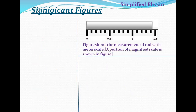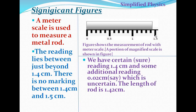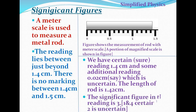For example, suppose the length of a rod is measured using a meter scale. The reading lies between 1.4 and 1.5 — we are certain about 1.4. If we divide that interval into 10 equal divisions, the additional digit might be 0.02 or 0.03, about which we are uncertain. So the reading is written as 1.42, where 1 and 4 are certain but 2 is uncertain, giving a total of three significant figures.